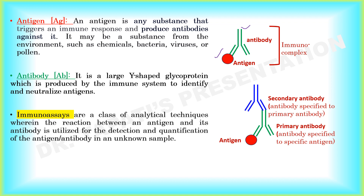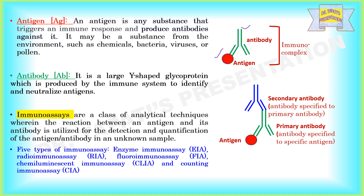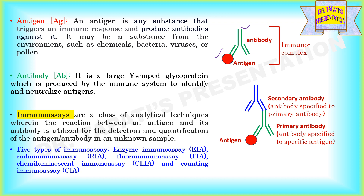Immunoassays are a class of analytical techniques wherein the reaction between an antigen and its antibody is utilized for the detection and quantification of antigen or antibody in an unknown sample. There are mainly five types of immunoassays: enzyme immunoassay, radioimmunoassay, fluoroimmunoassay, chemiluminescent immunoassay, and counting immunoassay. In this video, we are talking about the enzyme immunoassay or enzyme linked immunoassay, that is ELISA.